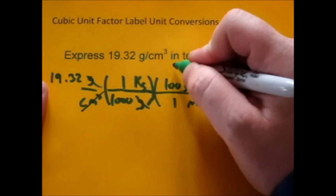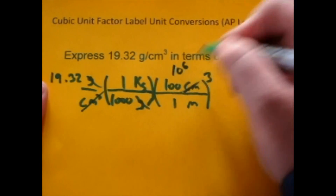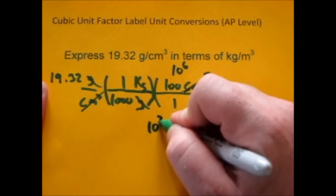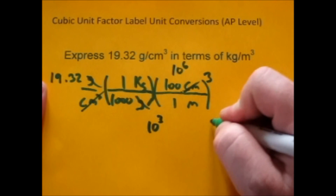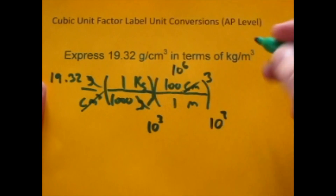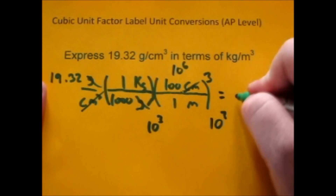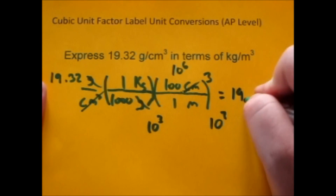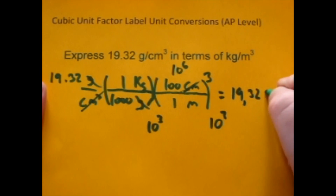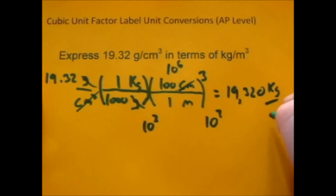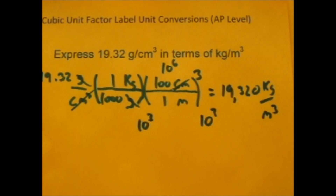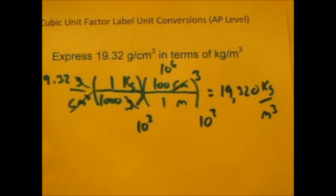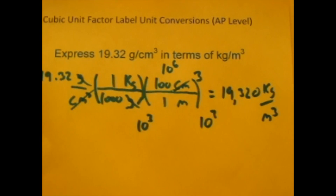What we really have is 10 to the sixth in the numerator and 10 to the third in the denominator, so overall we're multiplying by 10 to the third. That gives us 19,320 kilograms per meter cubed. And that's how you do the cubic unit factor label unit conversion.